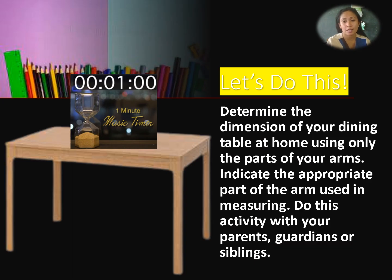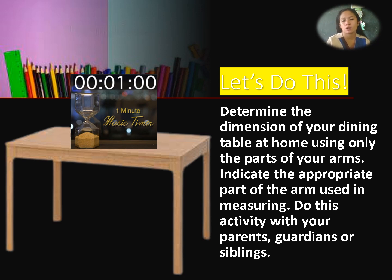Let's begin this lesson with this activity. Number 1: Determine the dimension of your dining table at home using only the parts of your arms. Take note of the parts of your arms you use. Number 3: Indicate the appropriate part of the arm used in measuring. You can do this with your parents, home tutors, or siblings.